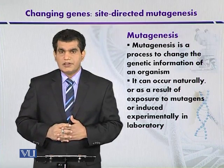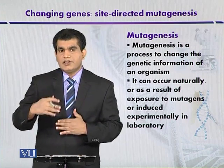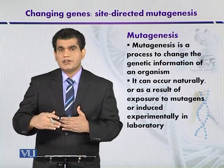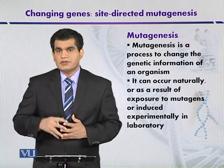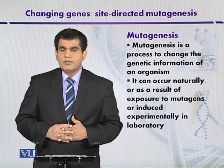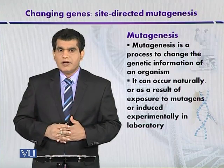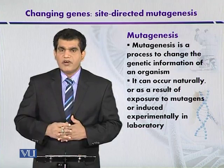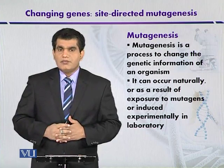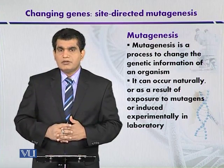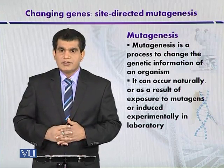Overall, mutagenesis can take place under natural conditions, may be triggered by certain mutagenic agents, and can be induced under laboratory conditions. This process of mutagenesis was first reported around 1927 by Herman Muller while conducting experiments with fruit flies. He first detected the phenotype related to mutation when he irradiated fruit flies with X-rays.